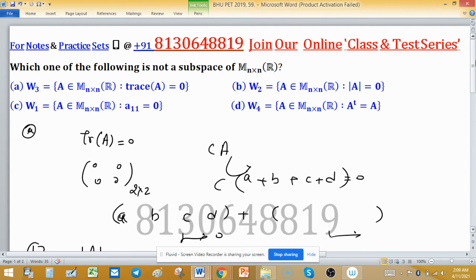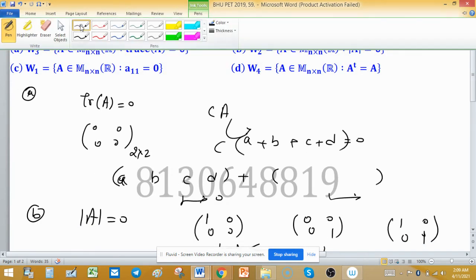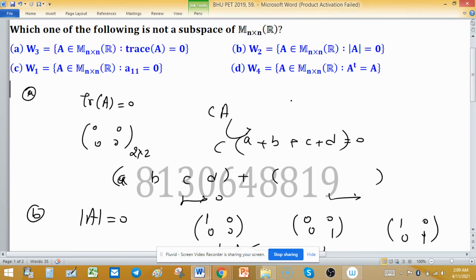Now let's see options C and D. If any element is in W₁, then the first element—the pivot position, the (1,1) entry—is zero. In the zero matrix, the first element is also zero. Therefore, W₁ is also a subspace.